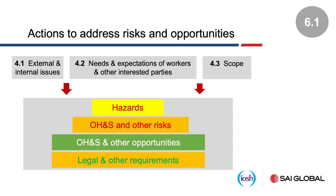Now we want some component of the planning done. This is also in some ways a replica of the original Plan Do Check Act slide. Clause 4.1 external issues, needs and expectations of workers and interested parties, and the scope have been defined — they feed into the planning process. But there are other components too: the hazards feed into the planning process as well. You've got OHS and other risks, which may include business risks — cyber security and other factors which could affect your management system and subsequently your OHS. Legal and other requirements also feed in.